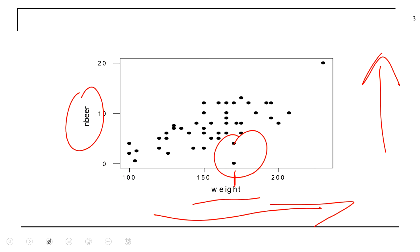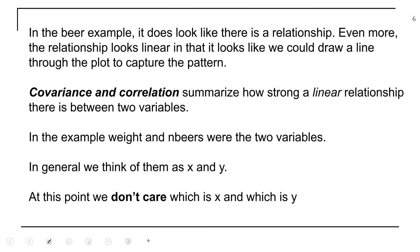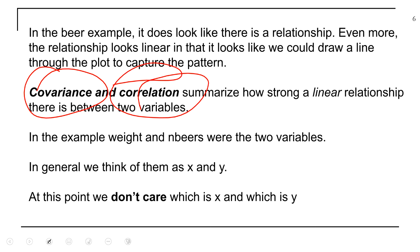At this point we don't care what's X and what's Y — it doesn't matter. We're not trying to do prediction; we just want to know if there's a relationship between the two variables. We have n pairs of data, so n rows, where everyone gives us two numbers: the number of beers and their weight. There are two measures — covariance and correlation — that tell us how strong a relationship exists between X and Y.